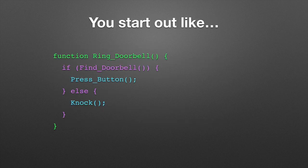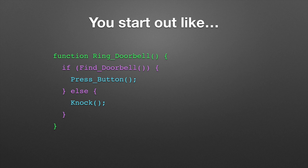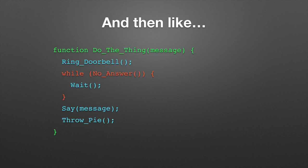So you start out writing simple functions. A function to ring a doorbell. It accounts for the fact that some doors don't have doorbells, so you have to knock — see, there's that conditional where you choose. But then you can include that function anywhere. Here we're including it in a function called 'do the thing.' What happens? We ring the doorbell, we wait for someone to answer, we say something — a message — and then we throw a pie.